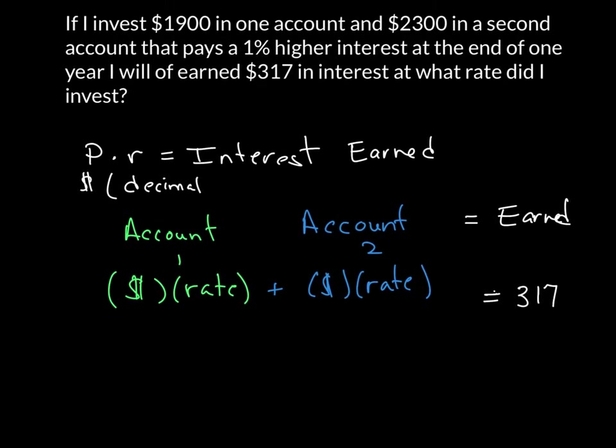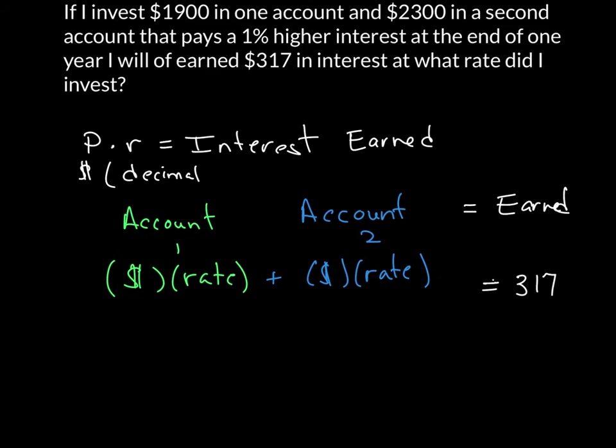So let's put in what I know. I know that the money for account one was $1,900. I don't know my rate yet, plus the money in account two was $2,300, and again, we don't know the rate yet, and all of that is equal to $317.